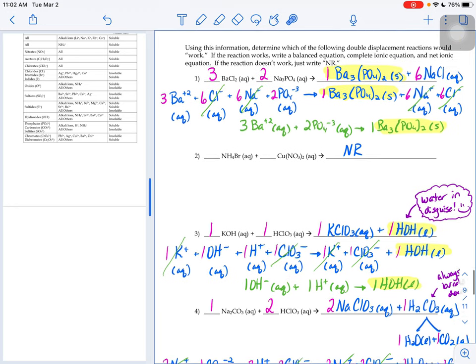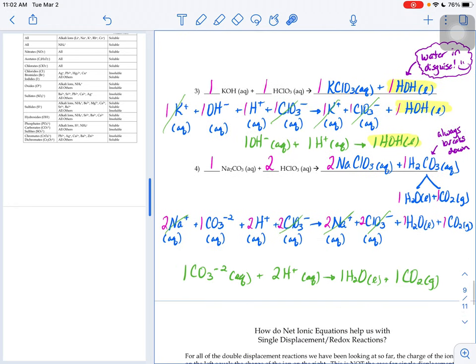So what's going to happen is technically, when you go to write the products of that reaction, you wouldn't write sodium chlorate and carbonic acid, you would write down three products: sodium chlorate, water, and carbon dioxide.